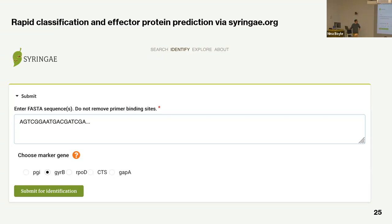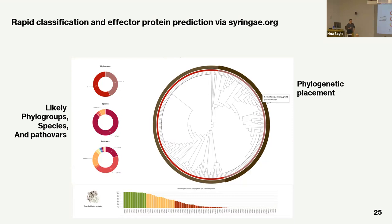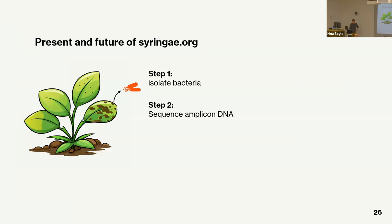I wanted to make it as easy as possible for pathologists to use these classifiers, so I created syringi.org, where you can submit amplicon sequences for the supported primer sets. The output is a phylogenetic placement within the tree with confidence intervals, labeled with phylogroups, species, and pathovars, so you can translate back into familiar nomenclature. At the bottom is a distribution of all type 3 effector proteins found in closely related strains, so you can assess which factors they probably have.